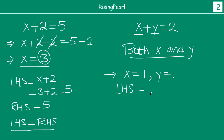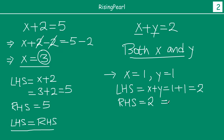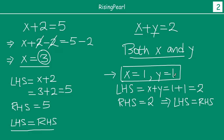The left hand side is equal to x plus y. Putting x equal to 1 and y equal to 1, we get 1 plus 1 equal to 2. And the right hand side is also equal to 2. This implies that left hand side is equal to right hand side. So we say x equal to 1 and y equal to 1 is a solution for our equation.